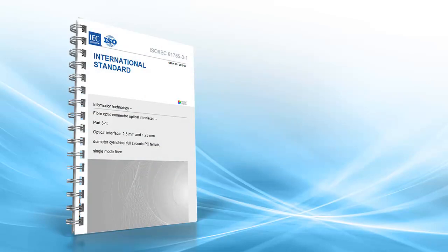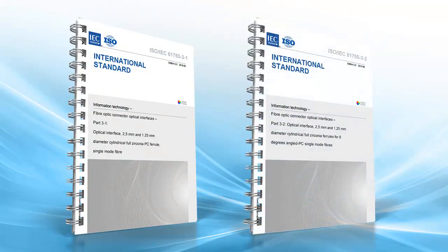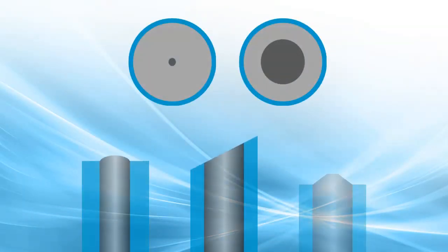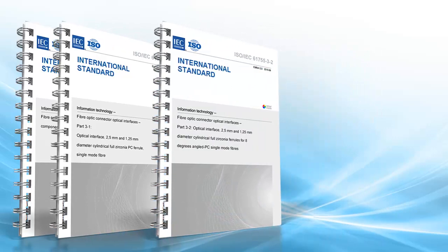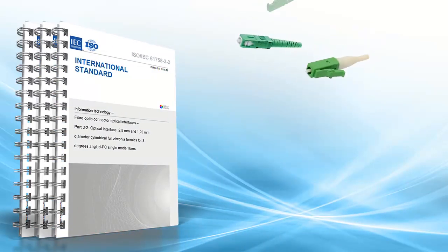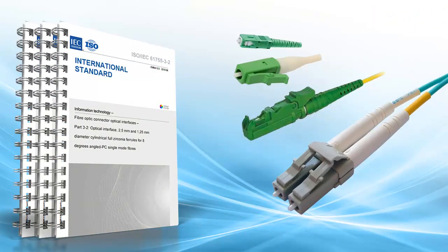Additionally, the standards IEC 61755-3-1 and IEC 61755-3-2 play a role as they define geometric parameters for fiber-optic plug-in connectors. The interaction of these three standards form the basis for the compatibility of fiber-optic plug-in connectors from different manufacturers and for the determination of manufacturer-neutral loss values.